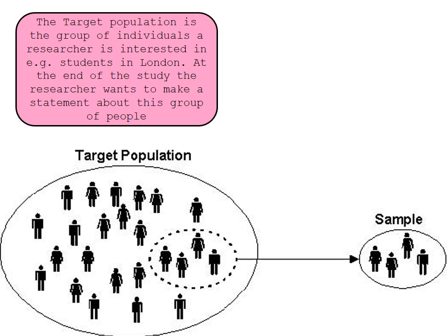Our target population is the group of individuals a researcher is interested in studying. For example, that could be students in London. At the end of the study, the researcher wants to make a statement about this group of people — all of the students in London. As you can imagine, there are loads of students in London, so that's quite a huge target population.